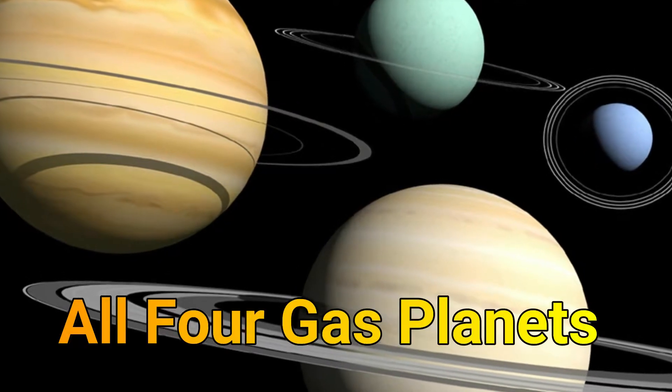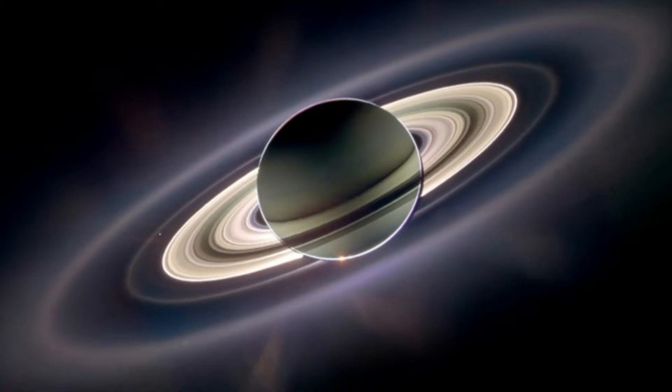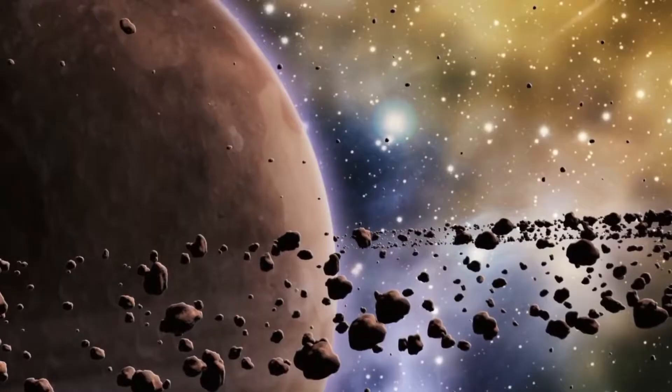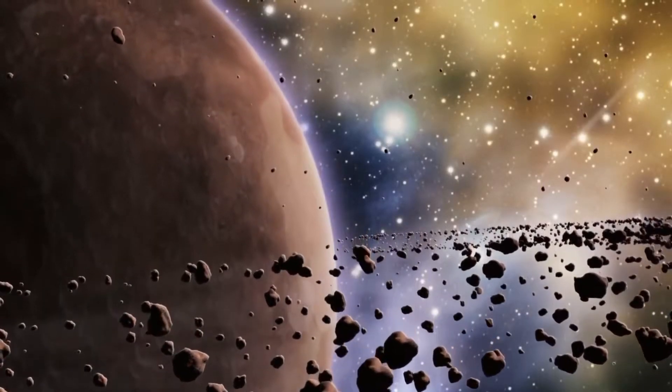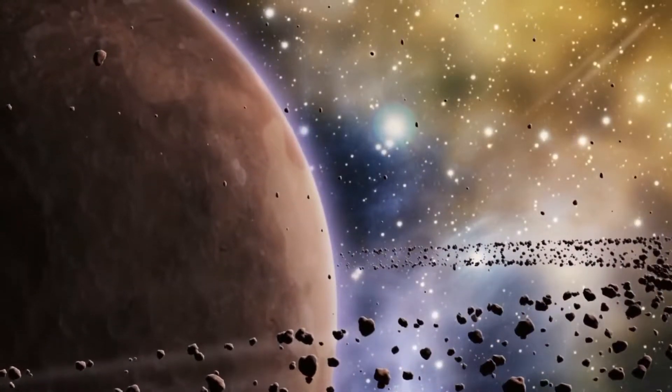All four gas planets in our solar system have rings, although Saturn has the most spectacular one. It's unclear to scientists why the rings are able to stay in a stable orbit without either escaping or crashing into the planet over such long time scales.